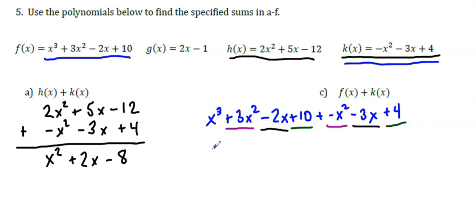Now I can bring down my x³ and then add 3x² plus negative x. So 3 plus a negative 1 is positive 2x². So -2x plus -3x, or -2x minus 3x, whichever way you want to think about it, will make a -5x. So I'll write that as minus 5x. And then 10 plus 4 is 14.